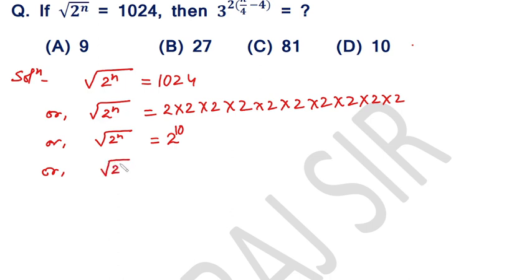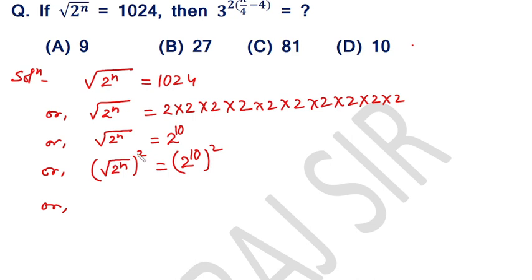Squaring both sides: square root of 2 raised to the power n, squared, is equal to 2 raised to the power 10, squared. This gives us 2 raised to the power n is equal to 2 raised to the power 20, so n equals 20.